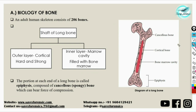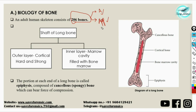An adult human skeleton consists of 206 bones of many types. Our whole skeletal system is divided into two types: the axial skeleton and the appendicular skeletal system. We will study this in detail when we look at the identification part in forensic medicine. For now, just know that there are two types: axial and appendicular.